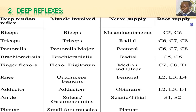If the corticospinal tract is damaged — for example, due to stroke or trauma — you will have a positive Babinski sign. In newborn babies up to about 12 months (sometimes up to 24 months), a positive Babinski can be present because the corticospinal tract is still developing. This does not mean the tract is damaged — it is simply underdeveloped.